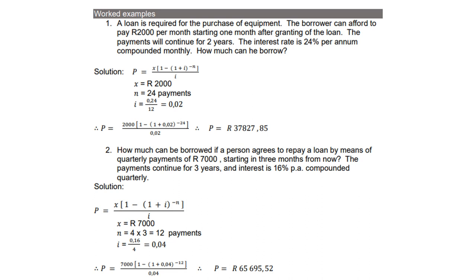So as you see, it's clear, it's a present value problem. So you write on a formula for present value. x is 2,000, remember it is 24 payments because it's 24 months. Then i remember now, it is the 24 divided by 100 divided by 12, which is 0.02. Then you do your substitutions, use the calculator, and the answer should be 37,827 Rand and 85 cents.